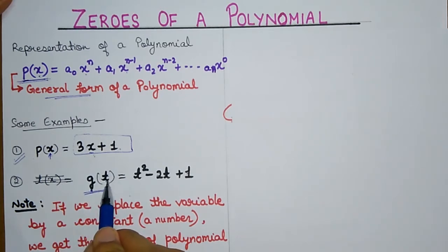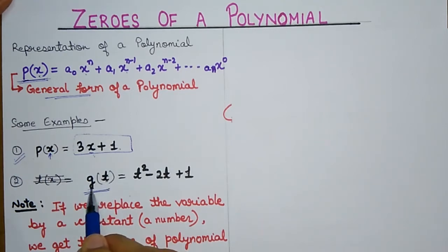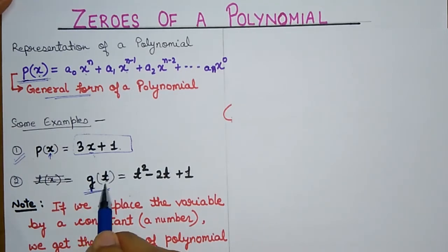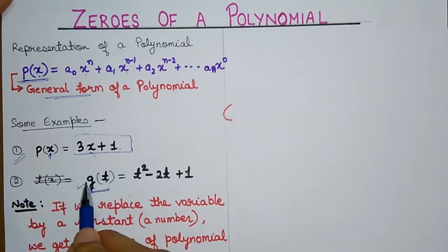I can also write P(t) or F(t) — anything. F is a name, G is a name, P is a name, and whatever is written inside the bracket indicates which variable is being used in that polynomial.